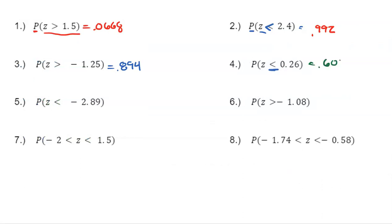Try the remaining examples now — pause the video and check your work. For number five: 0.00193 — note those first two zeros don't count as significant digits, so keep three significant digits. Number six: 0.860. Number seven: 0.910. Number eight: 0.240.